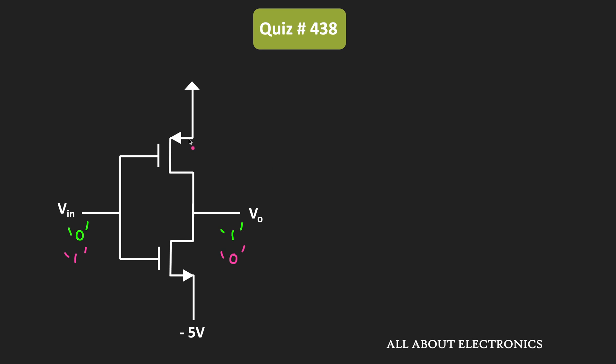In this case, the PMOS is connected with the ground terminal, while the NMOS transistor is connected with the minus 5V. That means in this case the input should also be equal to 0V and minus 5V. But let us see whether this circuit will work properly or not.